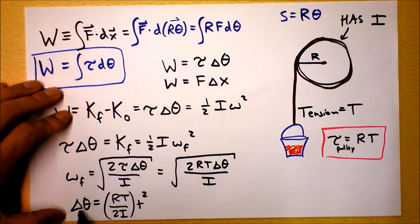So this looks like one-half of an acceleration, right? R T over I looks like an acceleration. And because the initial angular velocity was zero, we have this simple result right here.